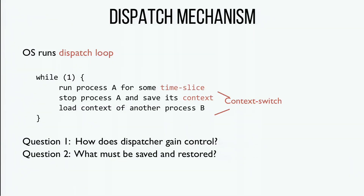The OS has a dispatch loop: whenever it runs, it's switching from one process to another. A process runs for a time slice — say 100 milliseconds — then at some point the OS gets control, stops process A, saves its context including all registers, and loads the context of the other process onto the architecture. How do we actually get control inside the OS, and exactly what context do we need to save and restore?